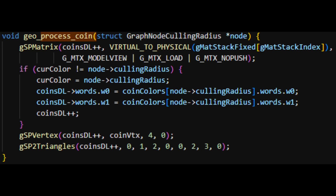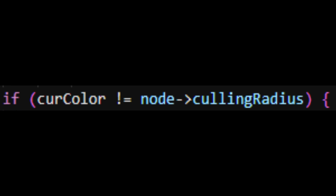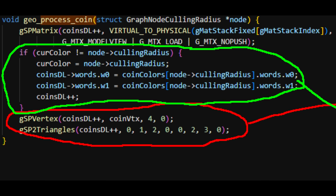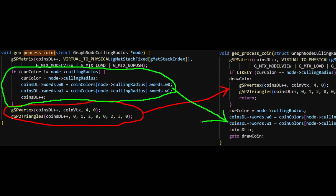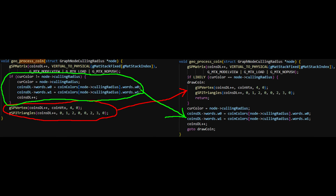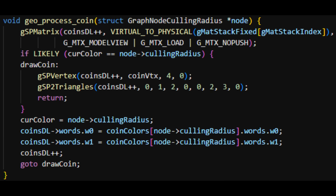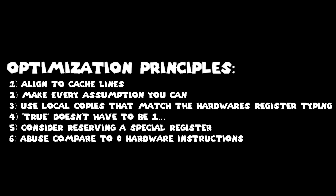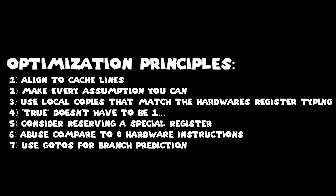Speaking of sacrificing readability, we can use gotos for branch prediction. When running a function, we will cache the entire function regardless of whether the condition passes or fails. The same principle of data locality applies to code as well. We can flip this whole thing around with a goto to force the compiler to put part of the code first. This compiles to the same amount of instructions and costs the same cycles, but rearranges memory so that the common path comes first, allowing us to skip caching the rare path.